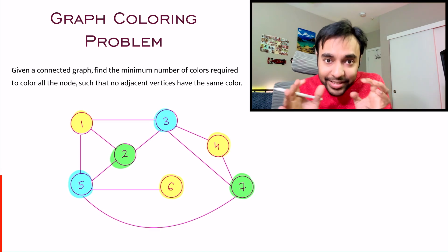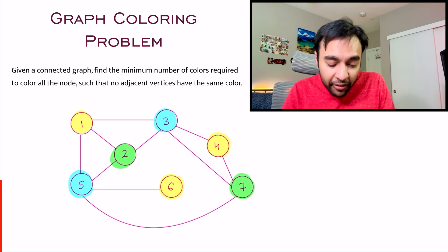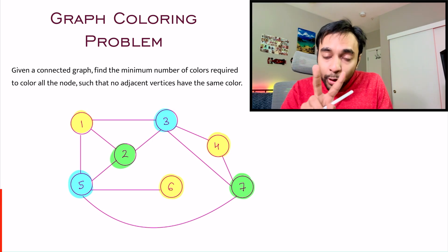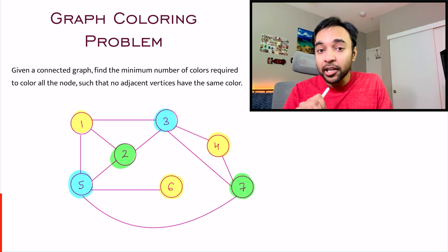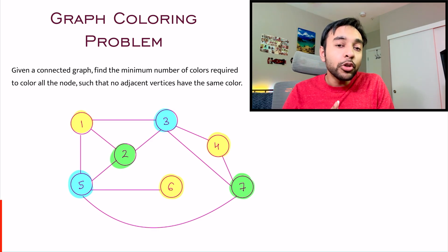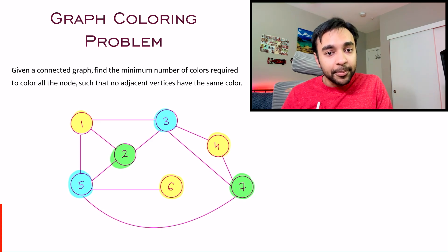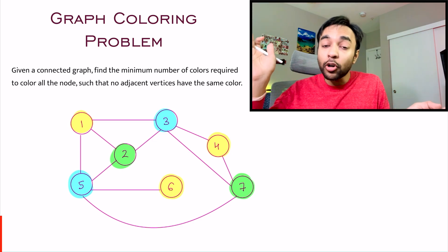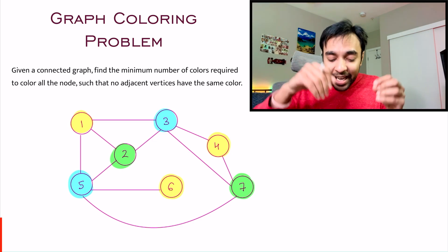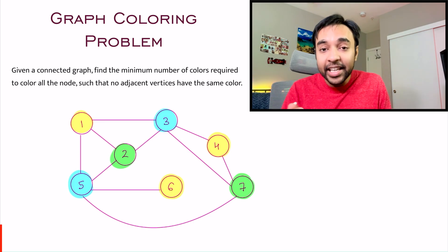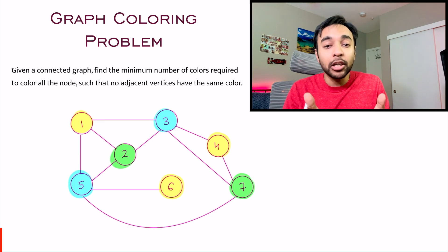You needed only three colors such that every adjacent node has a different color. So this is the problem statement — you have to find out the minimum number of colors required such that no two adjacent nodes have the same color. This number is also known as the chromatic number of the graph. This was indeed a brute force way. Given a graph, you can just try out so many different combinations and then ultimately arrive at an answer — these are the minimum number of colors required.